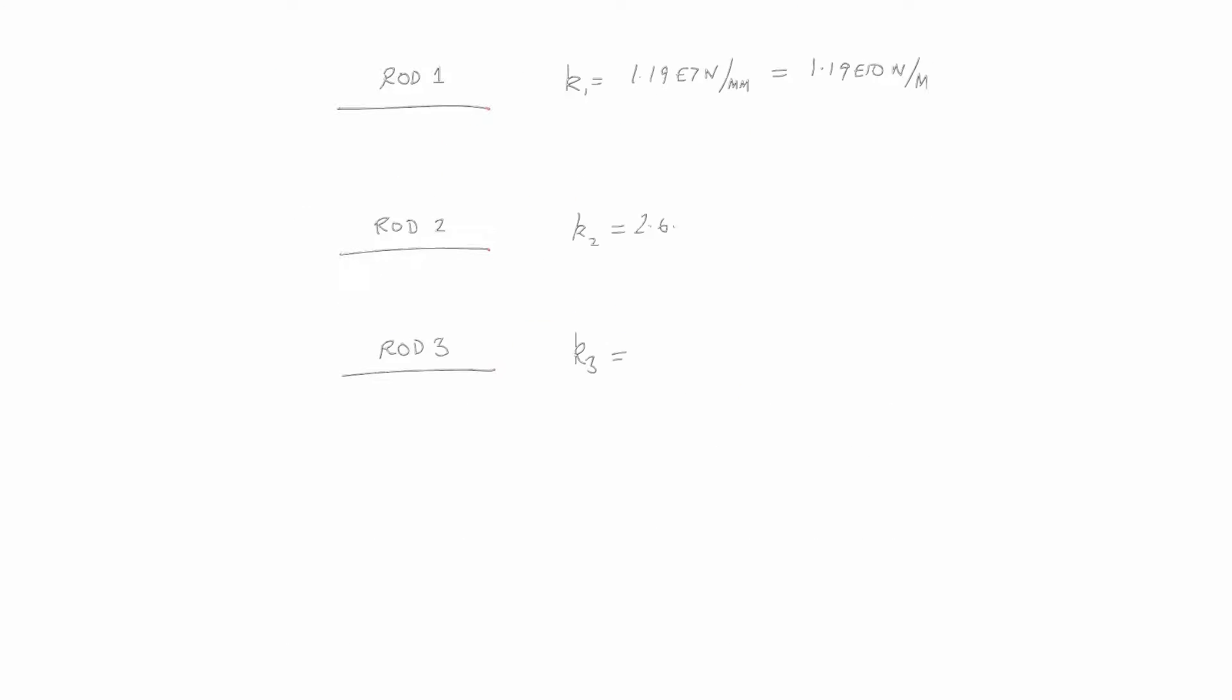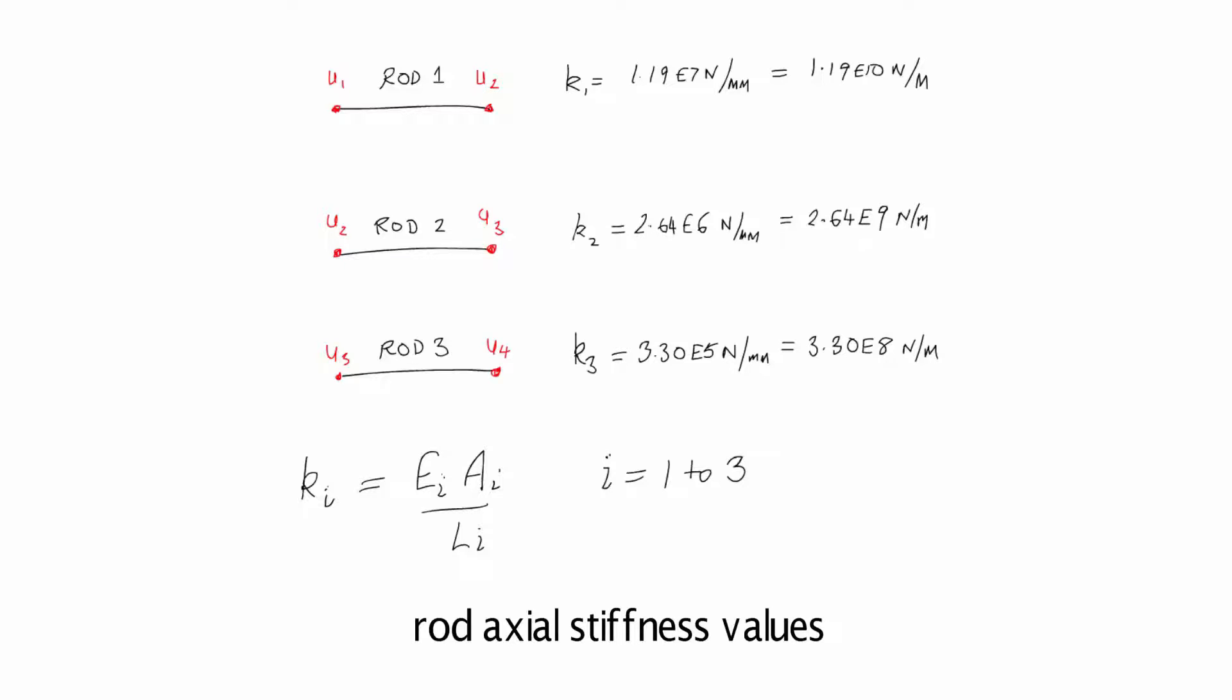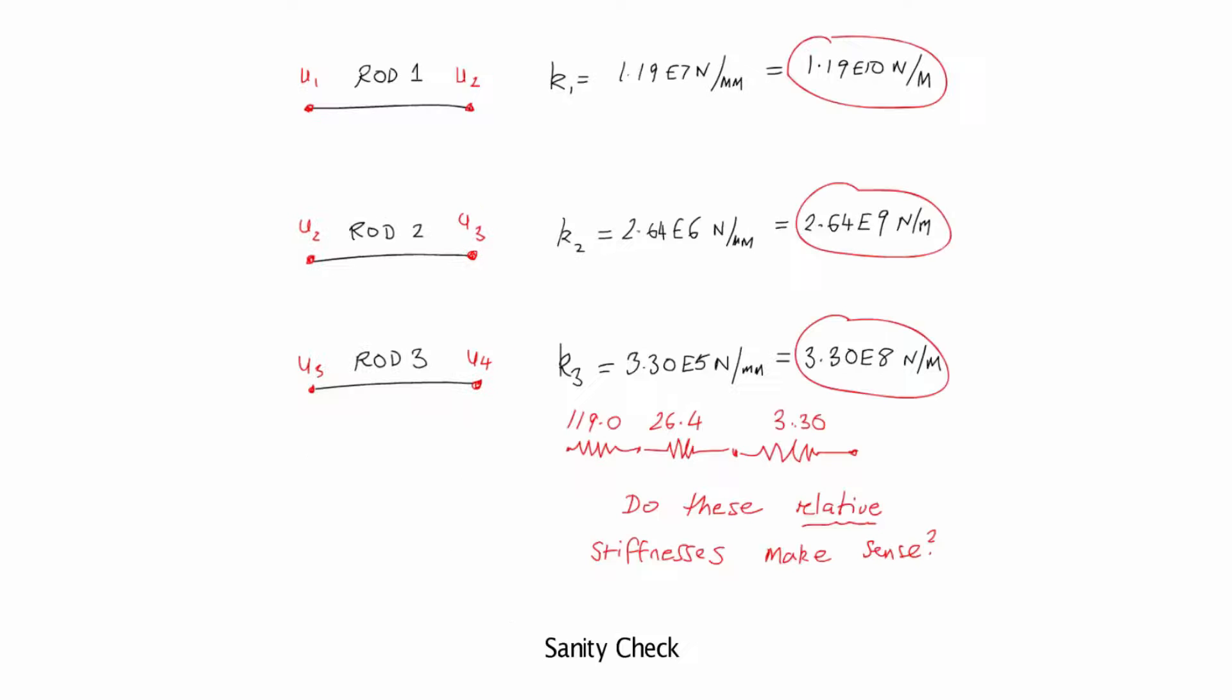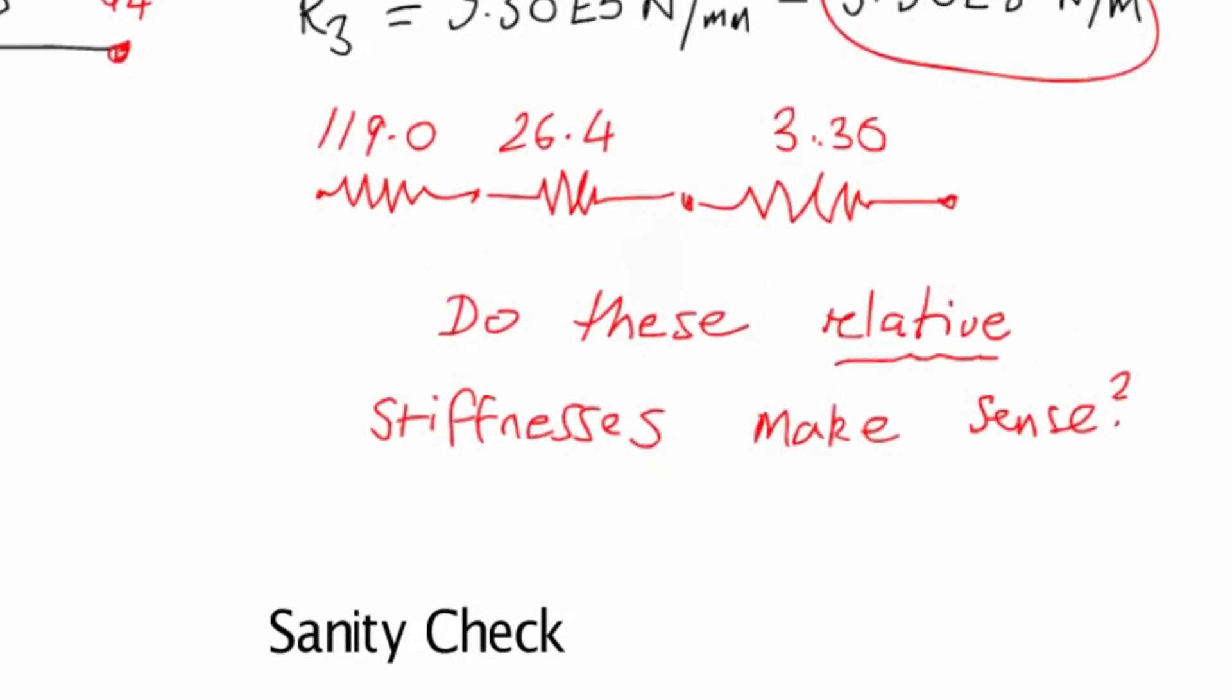We're putting in the numerical values for the three rods, developing k which is EA over L. That's the scalar axial stiffness term we developed in our previous videos. It's a good idea to try and get a feel for the relative stiffness of components in a structure. Here the relative stiffnesses do reflect the geometry of the rods.